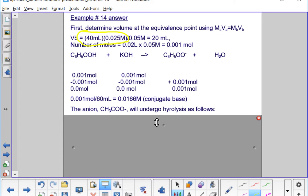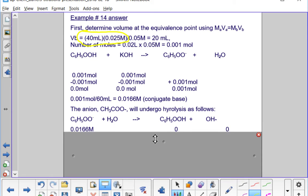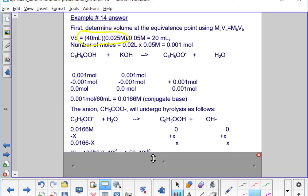That anion will undergo hydrolysis according to the following hydrolysis reaction. Put it in water, we generate benzoic acid again and excess hydroxide ions. So let's set up our ice table. Initially we have 0.0166 molar C6H5OO minus and no products. We decrease that by an amount of X and increase both products by that same amount X to get our equilibrium concentrations.